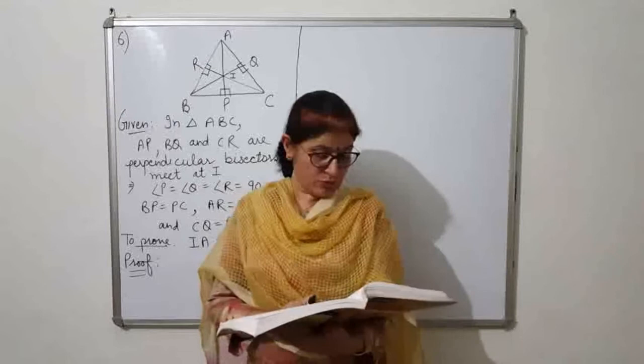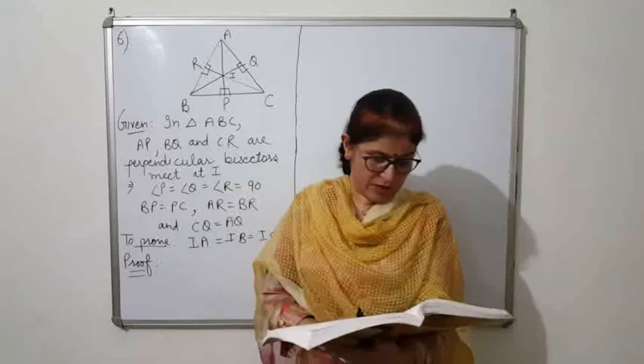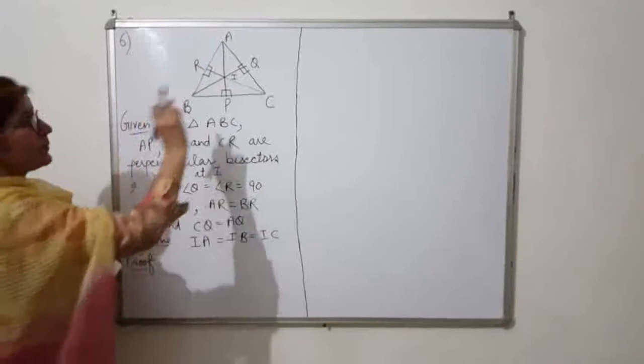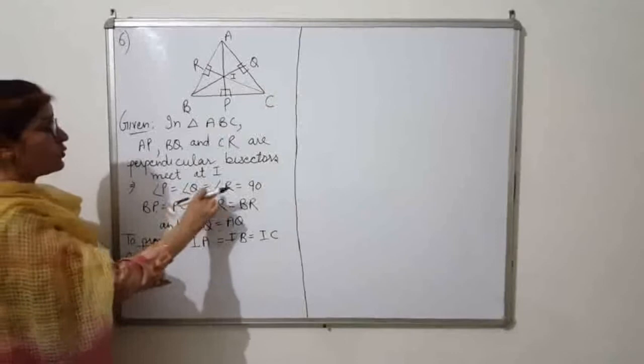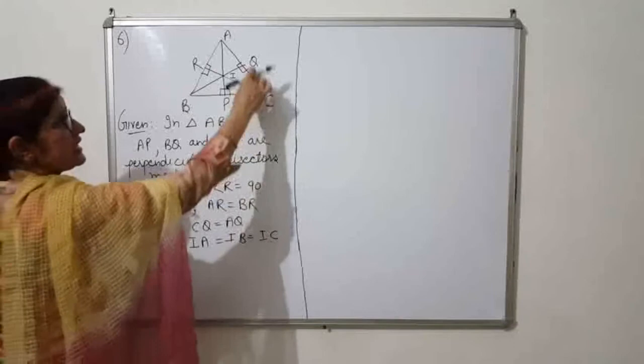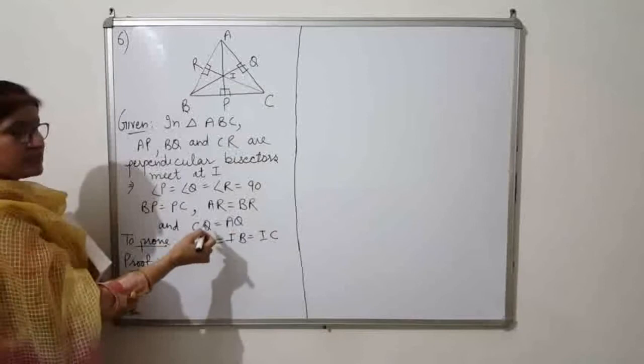Next, question 6. The perpendicular bisectors of triangle ABC meet at point I. We have to prove IA equals IB equals IC. Given: AP, BQ, and CR are perpendicular bisectors, so angle P equals angle Q equals angle R equals 90 degrees. Also, P is the midpoint of BC, Q is the midpoint of AC, and R is the midpoint of AB — so BP equals PC, AR equals BR, and CQ equals AQ.